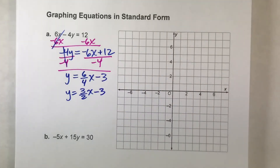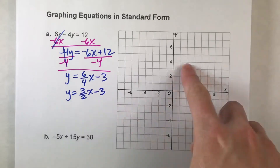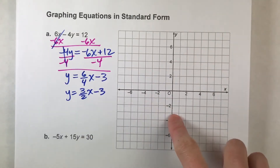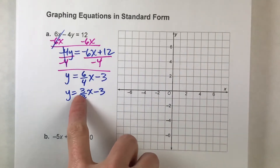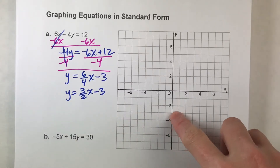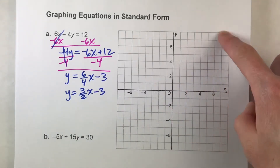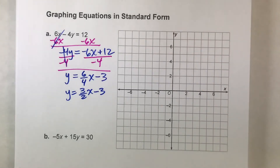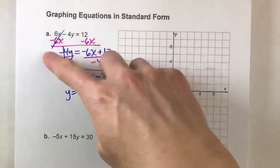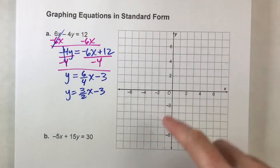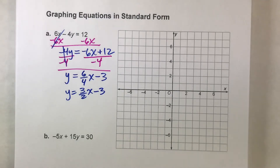Now that I've got it into slope-intercept form, I can graph this pretty easily. My y-intercept is negative 3 — plot that there. My slope is 3 over 2, so from negative 3 I'm going to go up 3 over 2 repeatedly and graph the line. But I want to show you another way to do this that's actually a lot faster than doing all of this algebra and then graphing using slope and y-intercept.